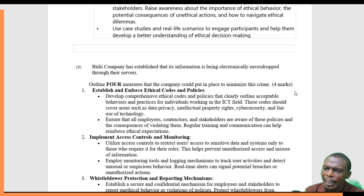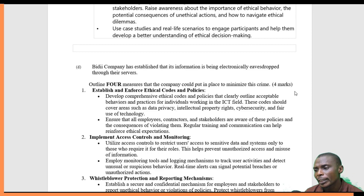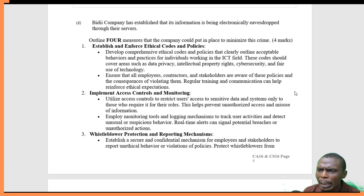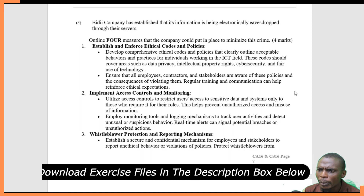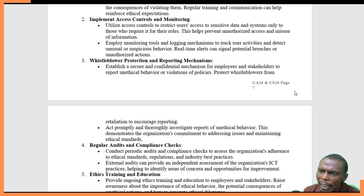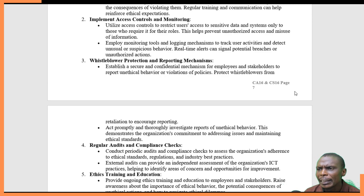The next question: BD Company has established that its information is being electronically dropped through their servers. Dropping is a technique where a person or device is able to anonymously get information from a system which they are not authorized to access. To address this, we could establish and enforce ethical codes and policies — comprehensive ethical codes that clearly outline acceptable behavior. We could also implement access control and monitoring to restrict access to sensitive data, ensuring that those who are not authorized cannot access information that does not pertain to them.